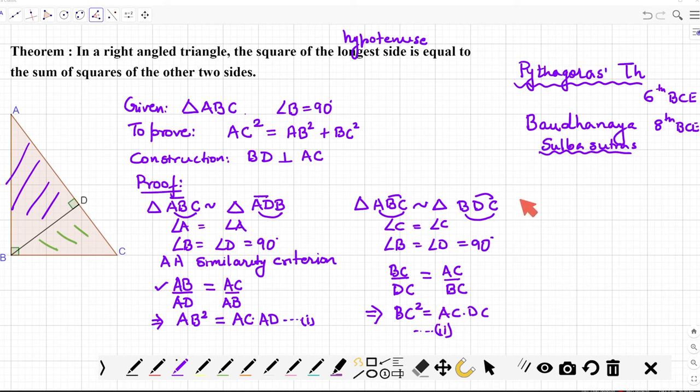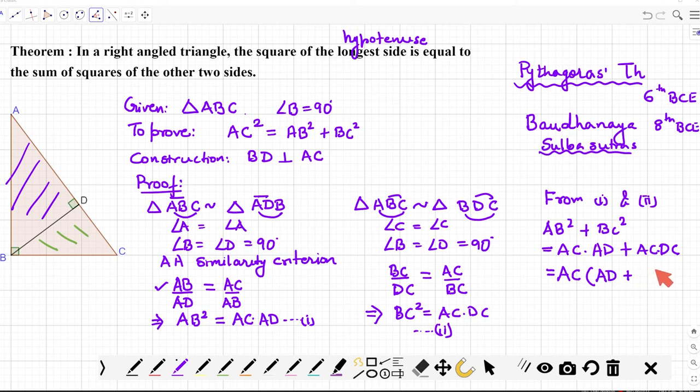Now what we are going to do is we are going to simply add these two equations one and two. From one and two, what do we need to do? Just add. So this is AB² plus BC² on the left hand side, and on the right hand side you will get AC into AD plus AC into DC. So now we can take AC common.